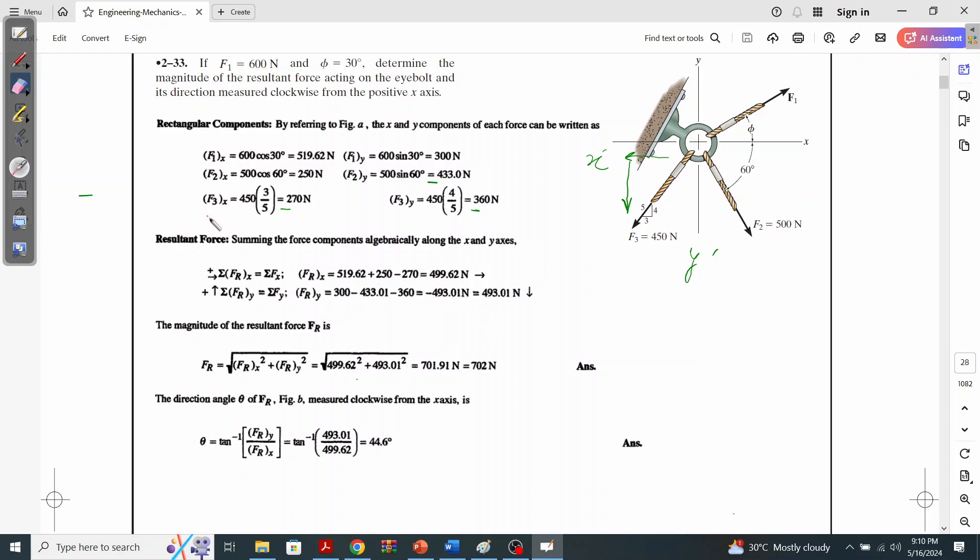What about FRy? Y components: 300 Newtons, negative 433 Newtons (he has now accepted his mistake and rectified it), and F3y is basically minus 360 Newtons. He added up all the y's and he gets basically minus 493.01 Newtons, and here he has put 493 and put this arrow downward, meaning it is acting towards the negative y-axis.